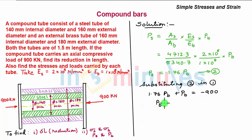So PB comes out to be minus 326 kilonewtons, which is a compressive load.